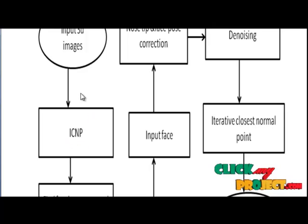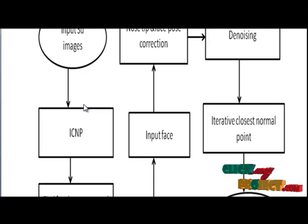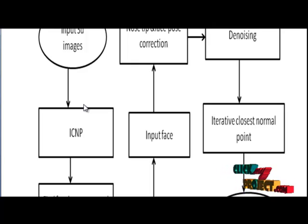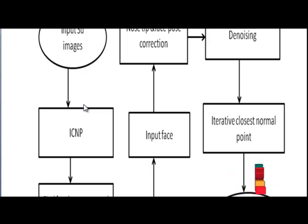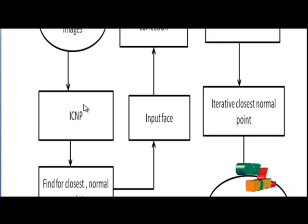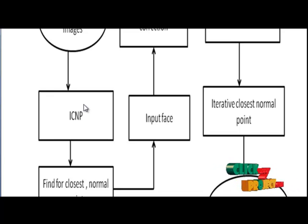The next step is ICNP — iterative closest to normal search. Our goal at this stage is to find, for each point on the reference face, one corresponding point on the input face. In order to smooth the correspondence, a 2D Wiener filter is applied to the distance vectors between the closest to normal points and the reference points. The input face is then rotated and translated to reduce the distance between the CNPs and the reference points, resulting in better alignment.